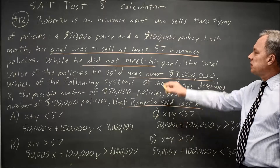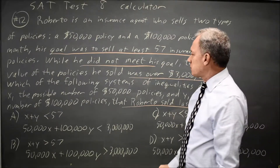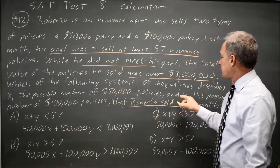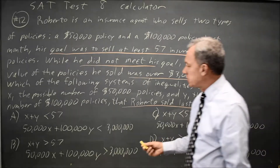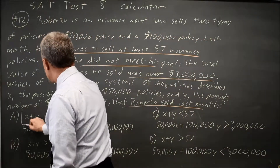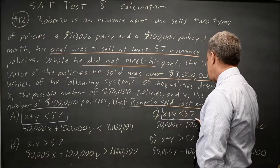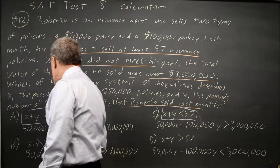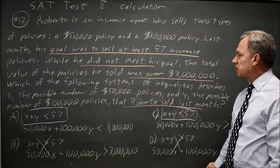Since he did not meet his goal of 57 policies, X plus Y — where X is the number of $50,000 policies and Y is the number of $100,000 policies — has to be less than 57. So inequalities showing X plus Y less than 57 are correct. X plus Y greater than 57 was his goal, but that's not what he actually sold. So choices B and D are wrong.